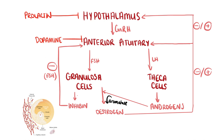This one follicle, the chosen one we might say, continues growing, and eventually produces enough oestrogen to initiate positive feedback on the HPG axis. This further increases GnRH and hormones, particularly LH, as FSH is kept low by inhibin. Once LH is high enough, follicular rupture occurs. This is called ovulation.